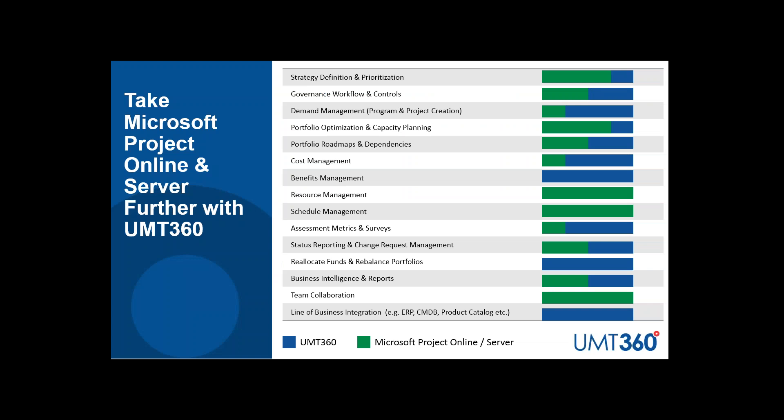Looking at the breakdown of where Project Server and UMT 360 each play a role: strategy definition and prioritization is a key aspect of Microsoft Project, while UMT 360 extends this with impact assessments on business strategy to derive overall absolute priority scores. Both tools contribute to governance processes. UMT 360 provides integrated cost and benefit management capability, while Project Server provides robust resource management capabilities.